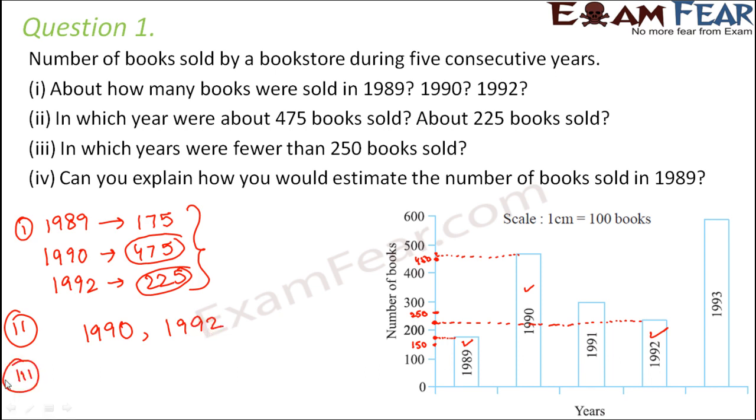Third question: In which years were fewer than 250 books sold? 1992 is one such year where less than 250 books were sold. So anything even lesser than 1992? Yes, 1989. So in 1989 also lesser than 250 books were sold.